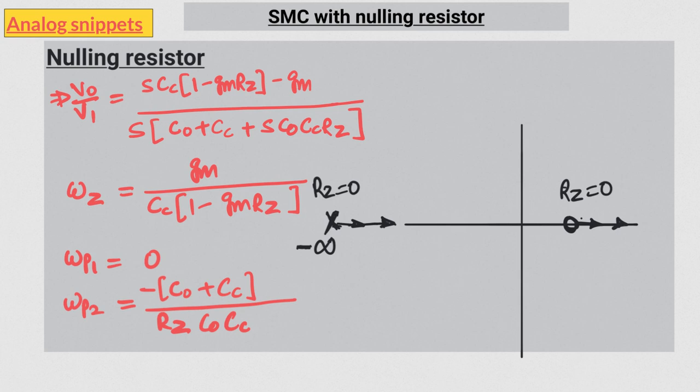Now when gmRZ becomes one, the right-hand zero reaches plus infinity frequencies. When we further increase the RZ value from here onwards, the zero actually moves to the left-hand plane and then starts to move from minus infinity to the right side.